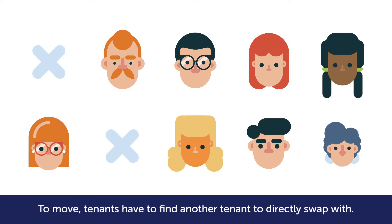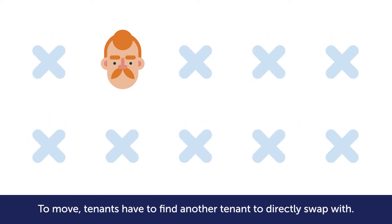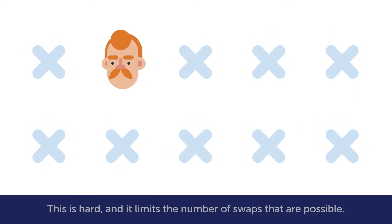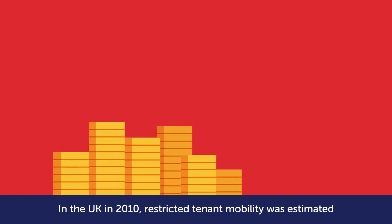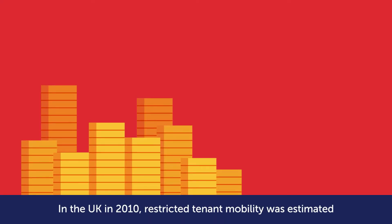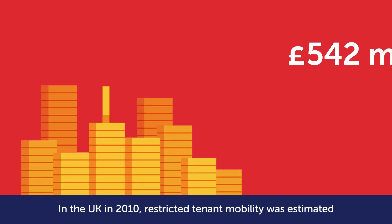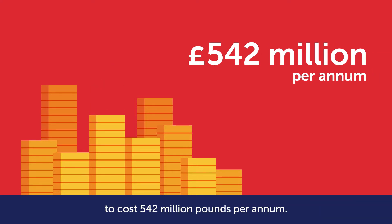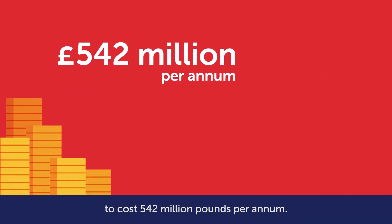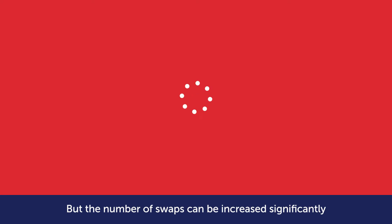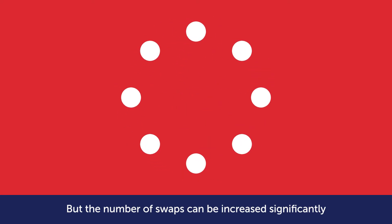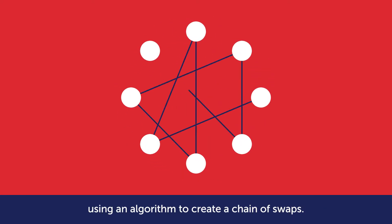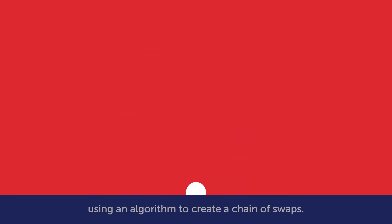To move, tenants have to find another tenant to directly swap with. This is hard and it limits the number of swaps that are possible. This is bad for the taxpayer too. In the UK in 2010, restricted tenant mobility was estimated to cost five hundred and forty-two million pounds per annum, but the number of swaps can be increased significantly using an algorithm to create a chain of swaps.